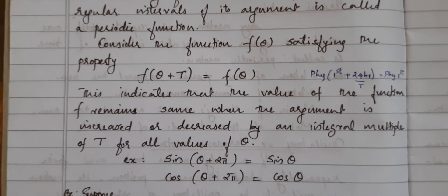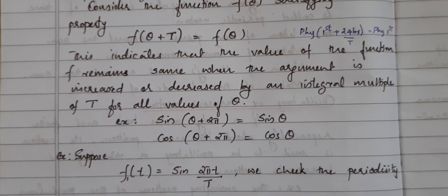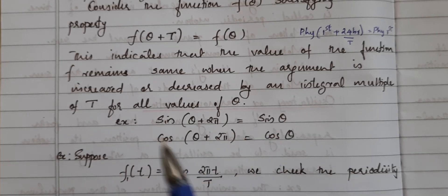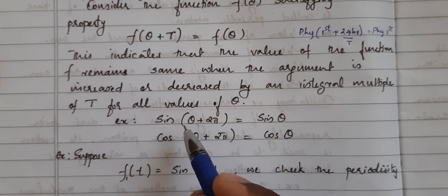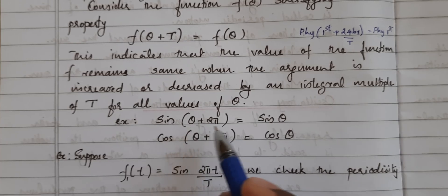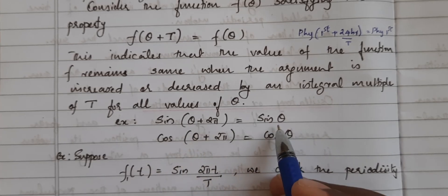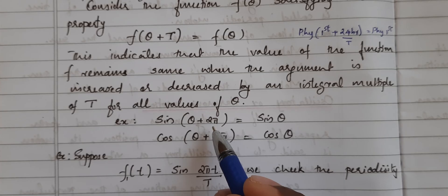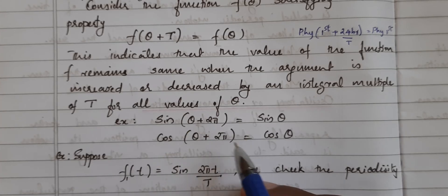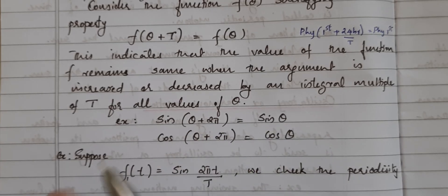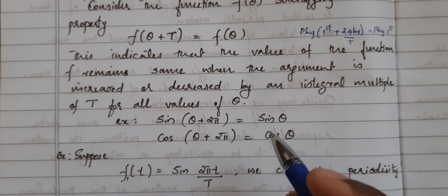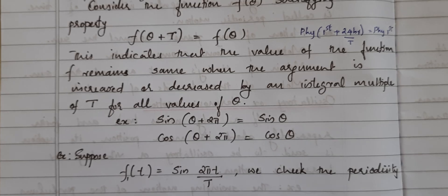Mathematical functions like sin θ and cos θ are the best examples of periodic functions. For example, sin(θ + 2π) gives sin θ itself, because the sine value repeats after every 360 degrees. Cos θ also repeats after 360 degrees or 2π.